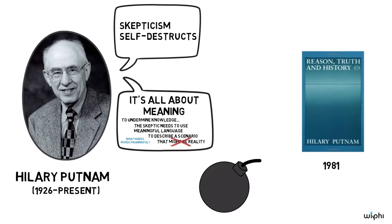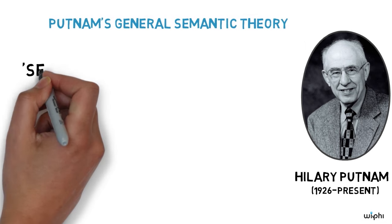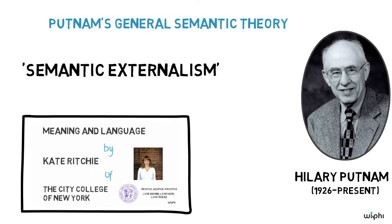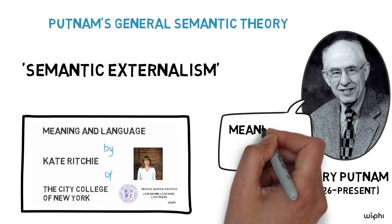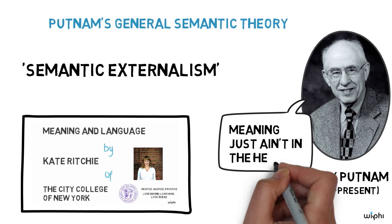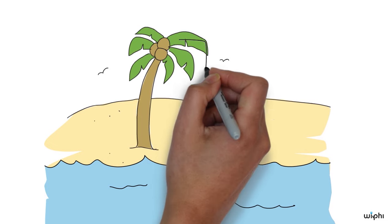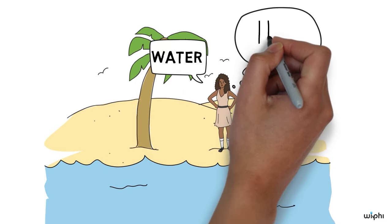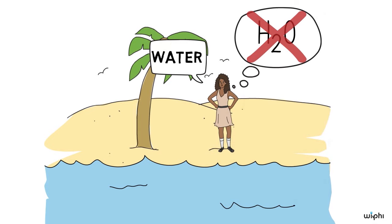To explain Putnam's semantic treatment of skepticism, we'll need to start with a look at his general semantic theory. Putnam is an advocate of a position known as semantic externalism, described in more detail in the video on meaning and language. According to semantic externalism, what gives your words meaning isn't a matter of your inner ideas or psychological states, but rather your relationship to things in your environment. For example, to use the word 'water' meaningfully, you don't need to have an accurate scientific theory of what that substance really is. Even people with very different ideas can be talking about the same thing when they use that word.